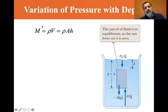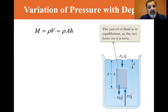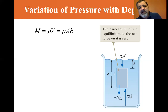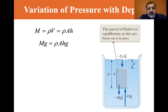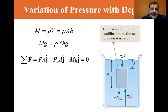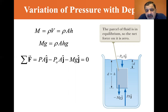Since rho equals mass divided by volume, mass equals rho times volume, which equals rho times A times h (area times height). The weight is mg, which equals rho·A·h·g. The sum of forces is: P·A ĵ minus P₀·A ĵ minus mg ĵ equals zero, since it's in equilibrium.